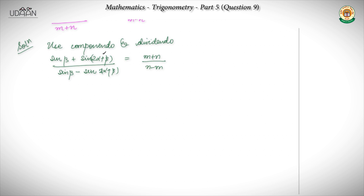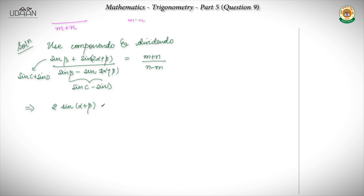There are two ways to solve this question. One is you expand it, but what I will do is apply the sin C plus sin D and sin C minus sin D formulas. So the expression will come out as 2 sin(α + β) cos α upon 2 cos(α + β) sin α.